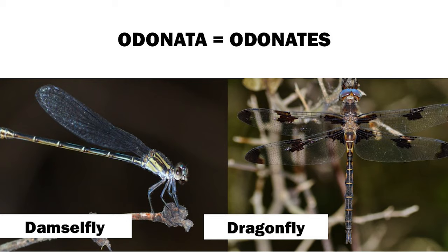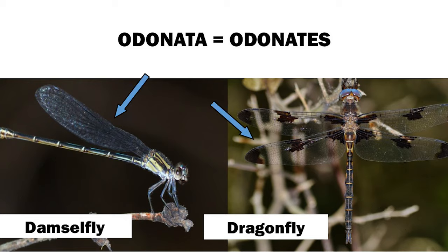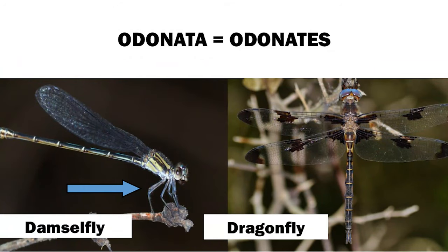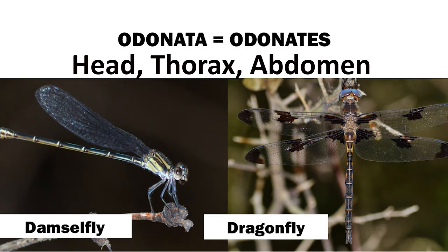They have similarities such as a long abdomen, two pairs of wings, large mouth parts called mandibles, six legs, and three body segments.